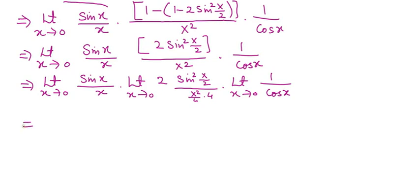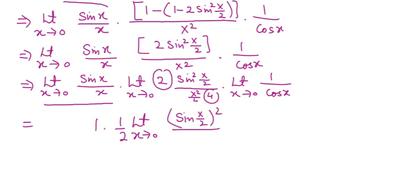This term will equal 1. By this 2 and this 4, you have 1/2. Take this outside the limit. Here you have sin (x/2) whole squared. This x squared by 4 may be written as (x/2) whole squared. When we put x equals 0, cos x equals 1, so 1 upon 1 is 1.